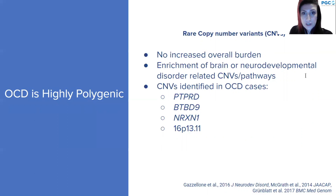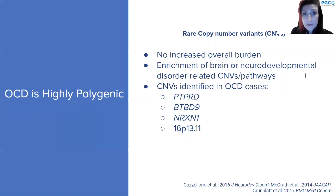There is evidence that rare variants also play a role in OCD. When we look at rare copy number variants or CNVs, the consistent finding is that there's no increased overall burden in rare CNVs for OCD, which is quite different from disorders like autism or schizophrenia. But there does seem to be an increased number of rare CNVs in gene sets related to brain function or in genes previously associated with neurodevelopmental disorders.